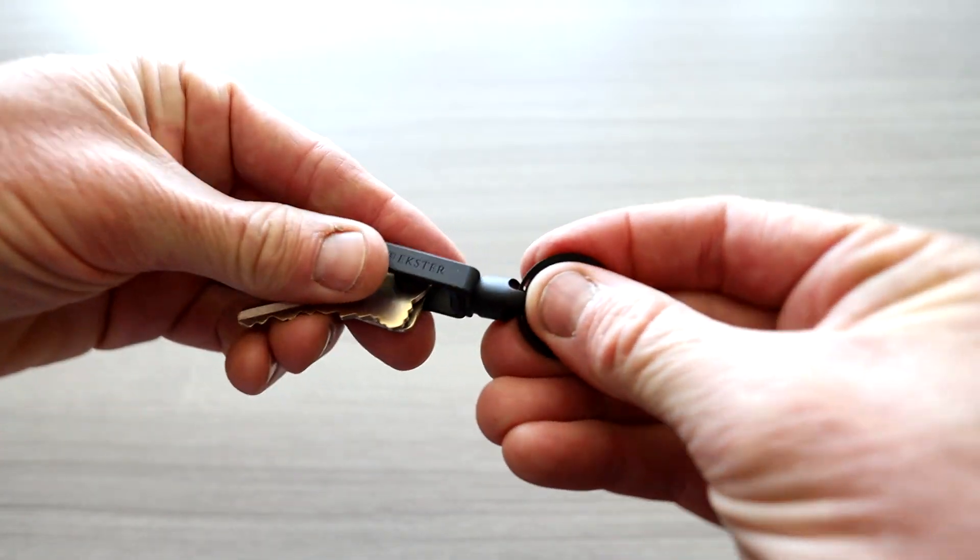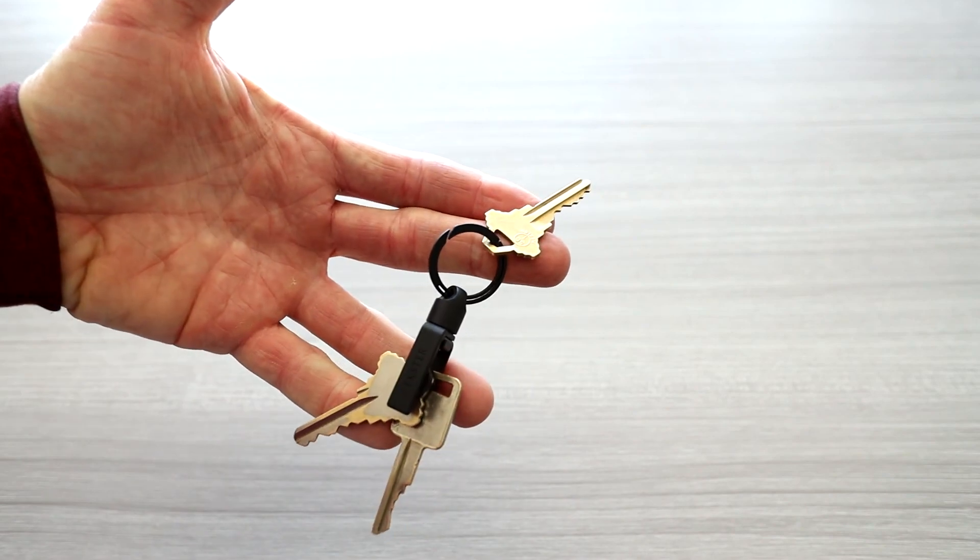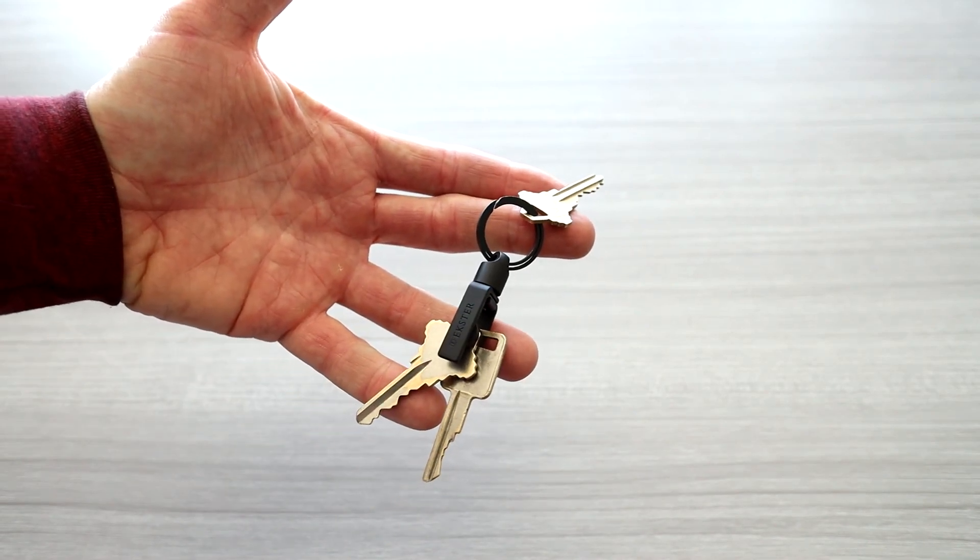And of course, the magnetic little clip there. And then like I said, you can add on to it if you need another key. On that side, a carabiner, something you want to clip onto your jeans, et cetera.